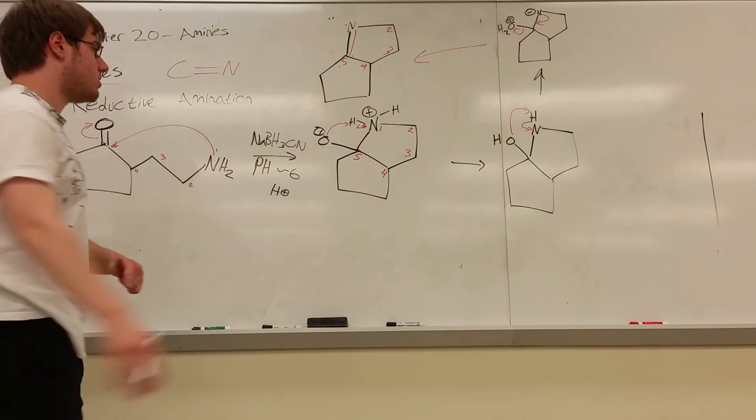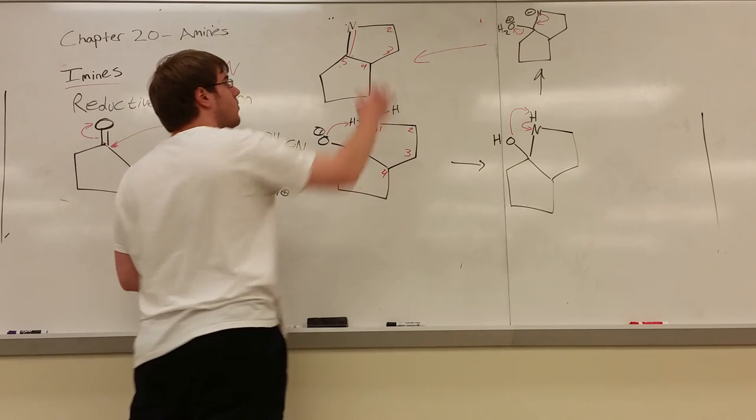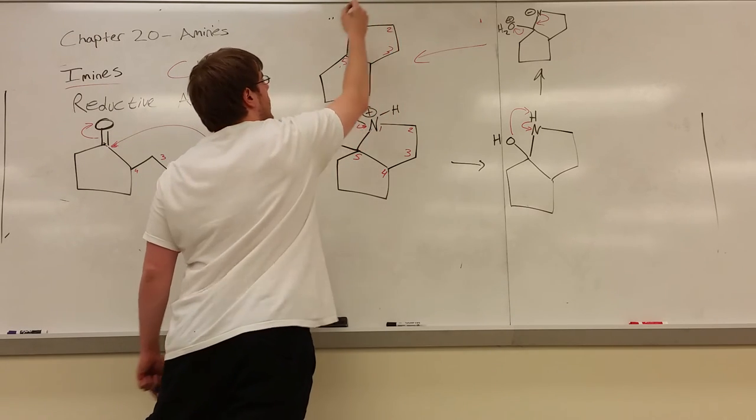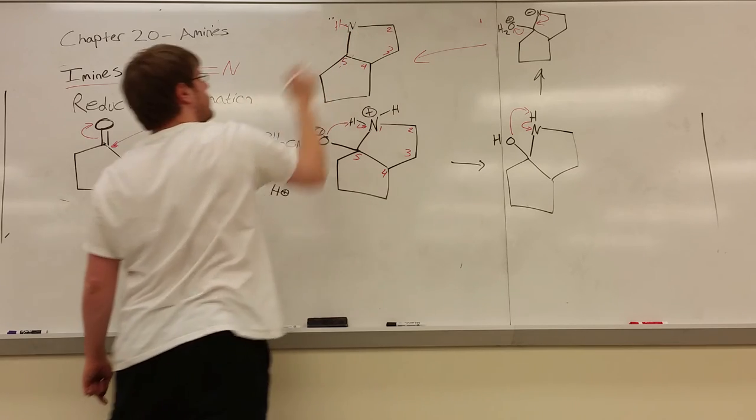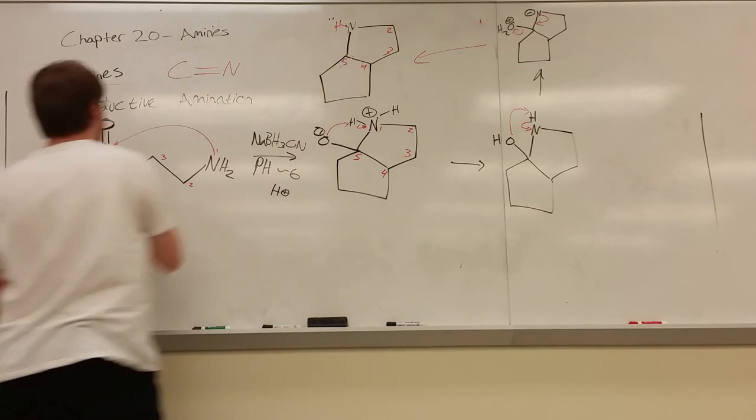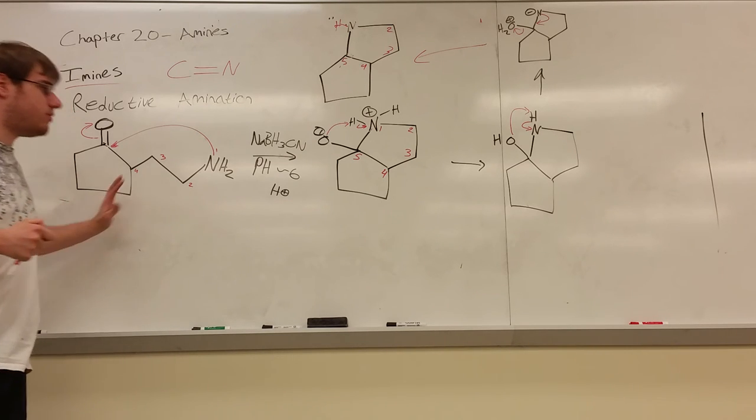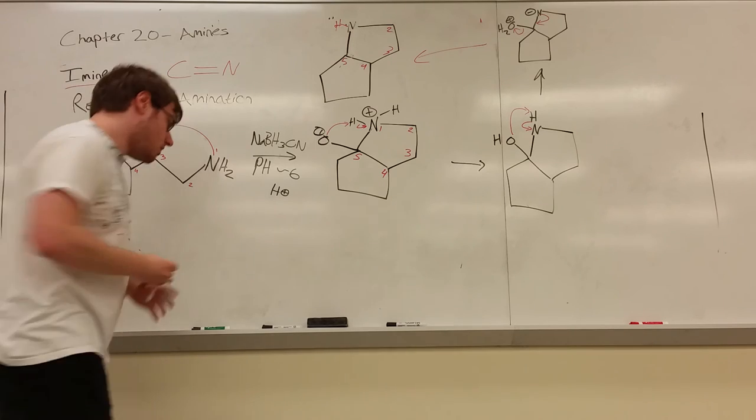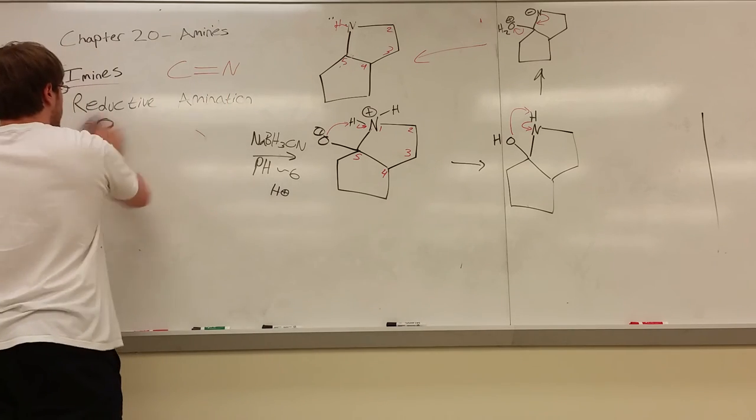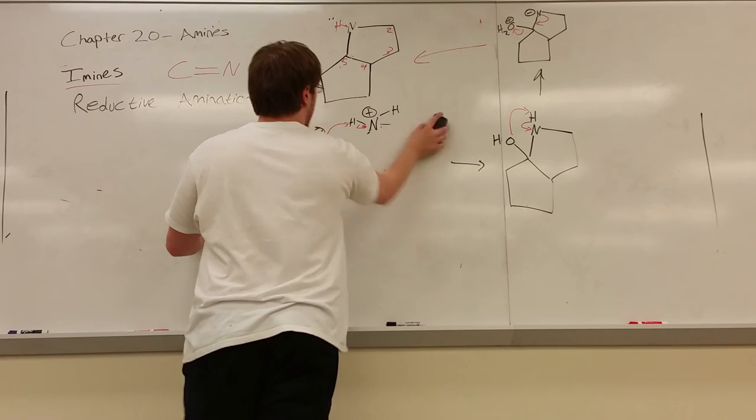But then NABH3CN will react on that, reduce the carbon-nitrogen double bond, which is what we wanted, and turn it into a single bond. So this would be the final product of this reaction. So you should be able to do reductive amination going forward. This is a very common part two question. And now, try a synthesis problem where we have to go backwards.